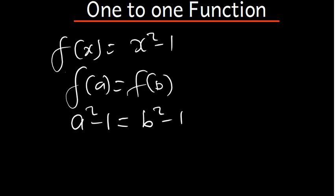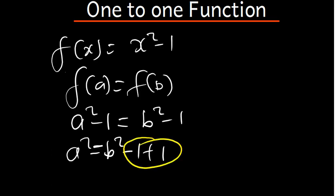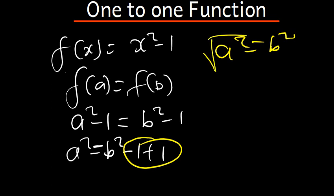I can shift the -1 to the other side, giving a² = b² - 1 + 1. These two cancel out, so I have a² = b². To make a the subject of the formula, I'll square root both sides, which means this side becomes plus or minus, so a = ±b.